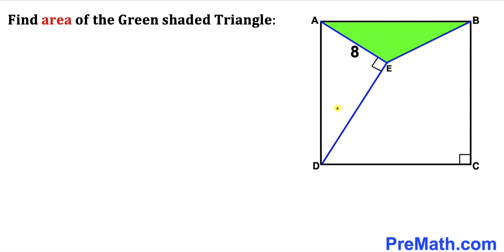Welcome to Pre-Math. In this video we have two triangles inscribed in a square ABCD. Line segment AE is 8 units and angle DEA is 90 degrees. We are going to calculate the area of this green shaded triangle.